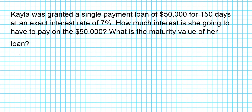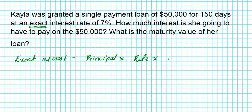Let's write out the formula again to refresh our memories. The formula for exact interest — how do we know it's exact? It's indicated in the problem: we're looking at an exact interest rate of 7%. So the exact interest is going to be the principal times the rate in decimal form, multiplied by the time divided by 365.